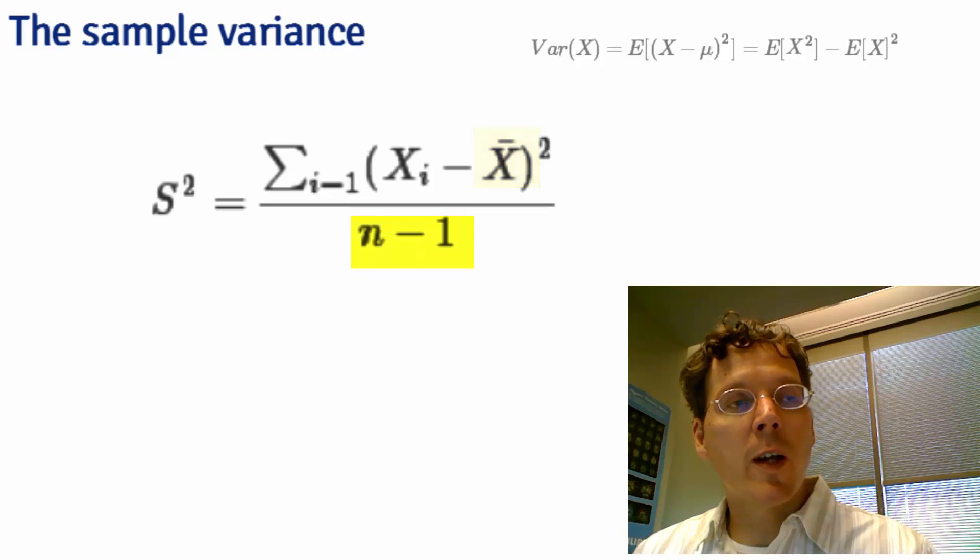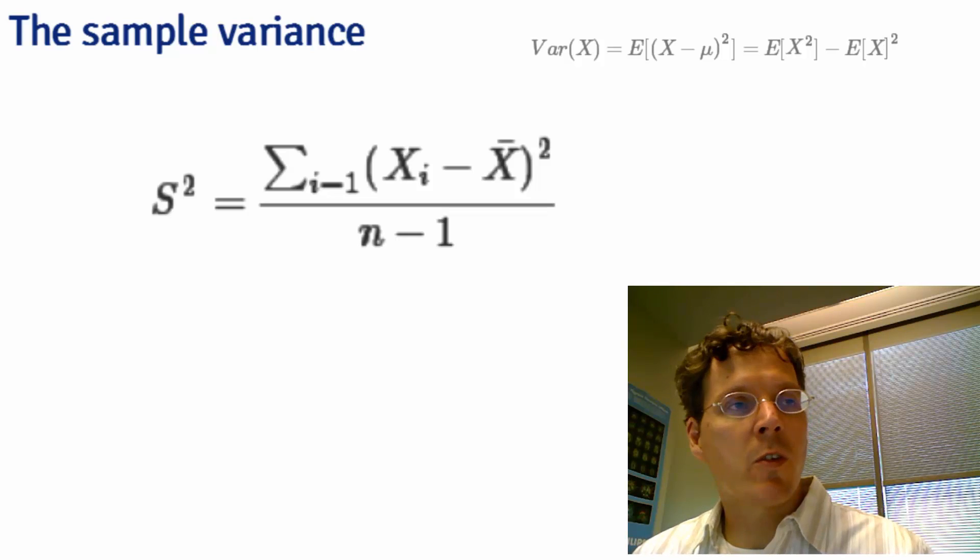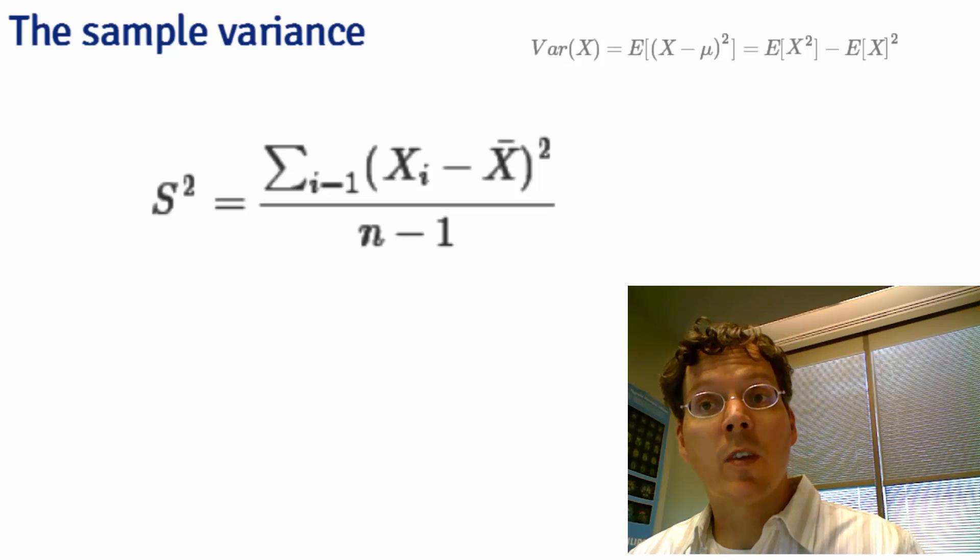We do divide by n minus 1 here in the denominator rather than n, and I'll talk about why in a minute. But I also want to talk about a conceptually difficult point, which is the variance of the sample variance.